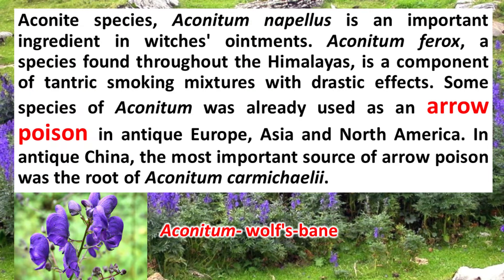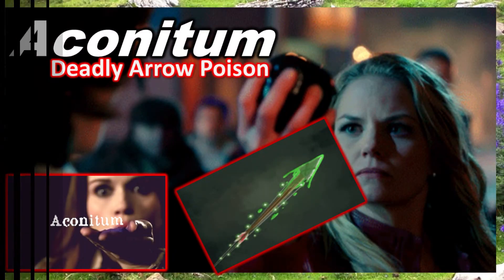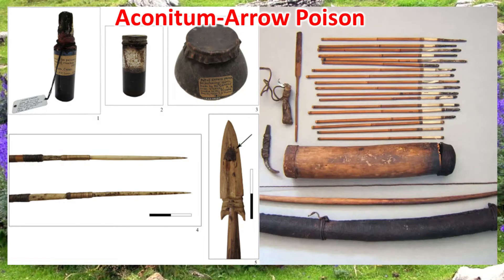Some species of Aconitum have been used as arrow poison in ancient Europe, Asia, and North America. In ancient China, the most important source of arrow poison was the root of Aconitum. Aconite is a very fast-acting toxin or poison, and hence it has been used as arrow poison.